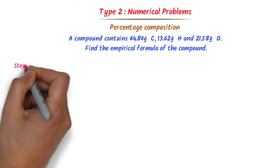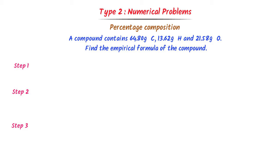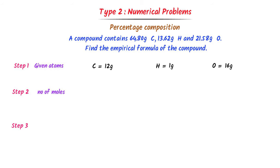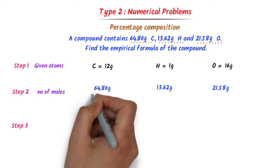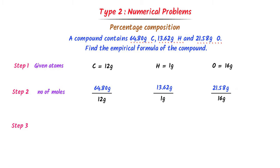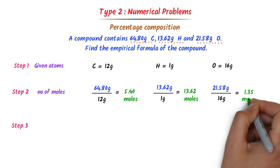This numerical now resembles a Type 1 problem, so I solve it using the same three steps. In the first step, I write the atoms — carbon, hydrogen, and oxygen — and their atomic masses: carbon is 12 grams, hydrogen is 1 gram, and oxygen is 16 grams. In the second step, I find the number of moles by dividing: 64.8 by 12, 13.62 by 1, and 21.58 by 16. After calculation, I get 5.4 moles of carbon, 13.62 moles of hydrogen, and 1.35 moles of oxygen.